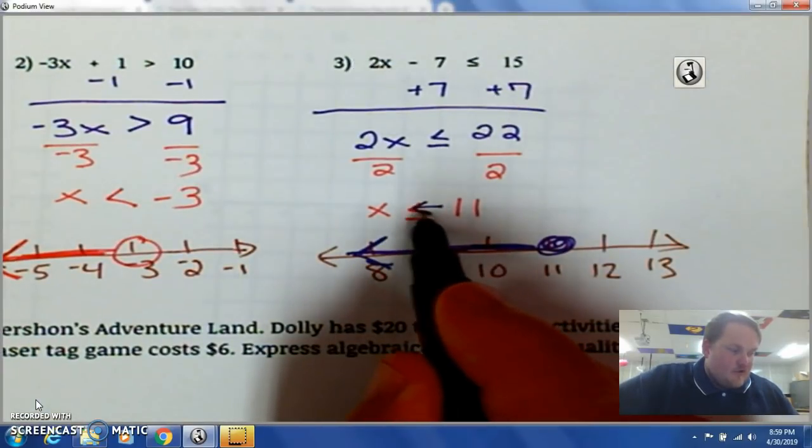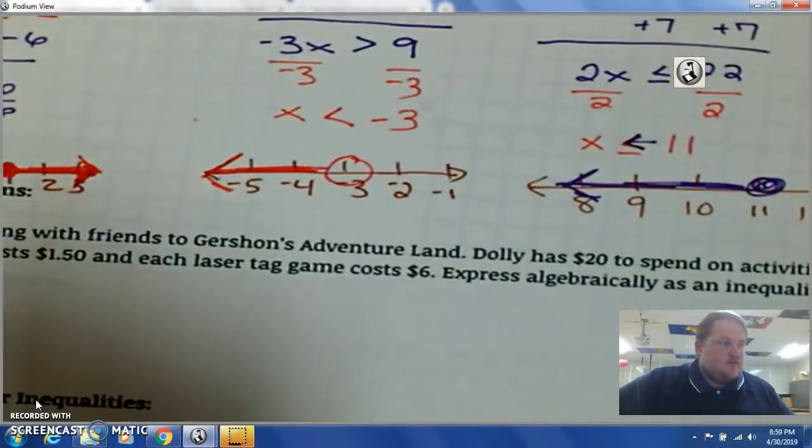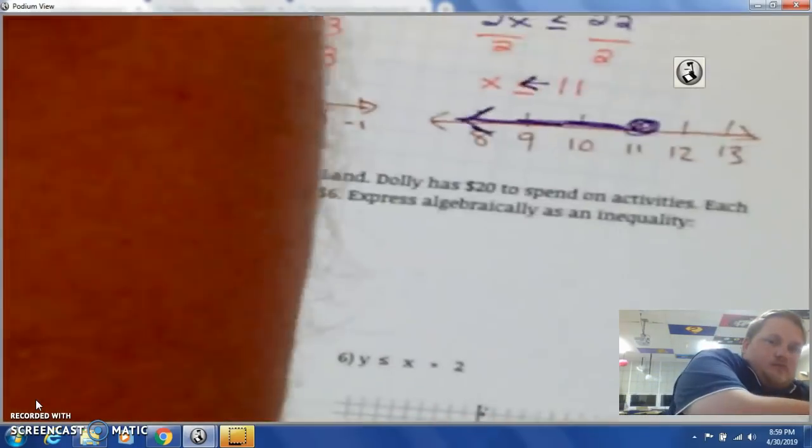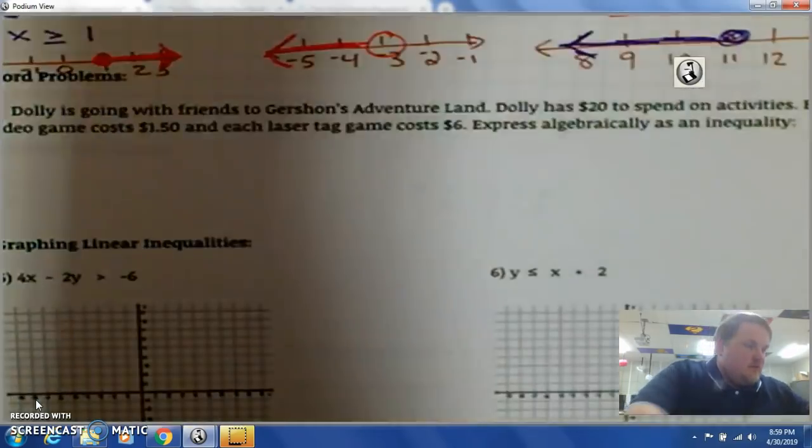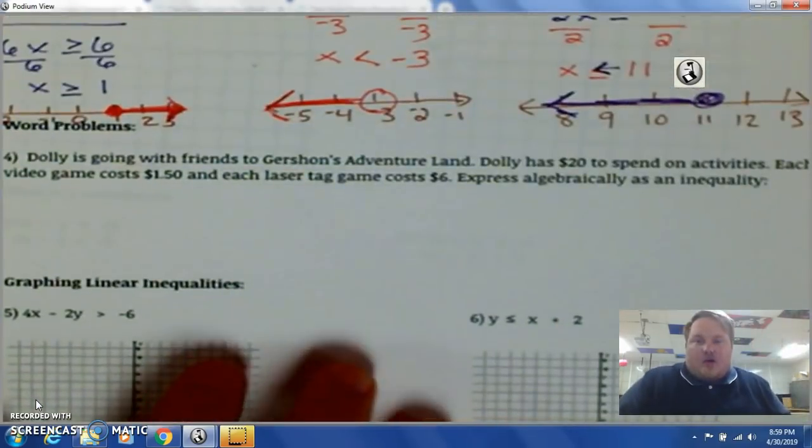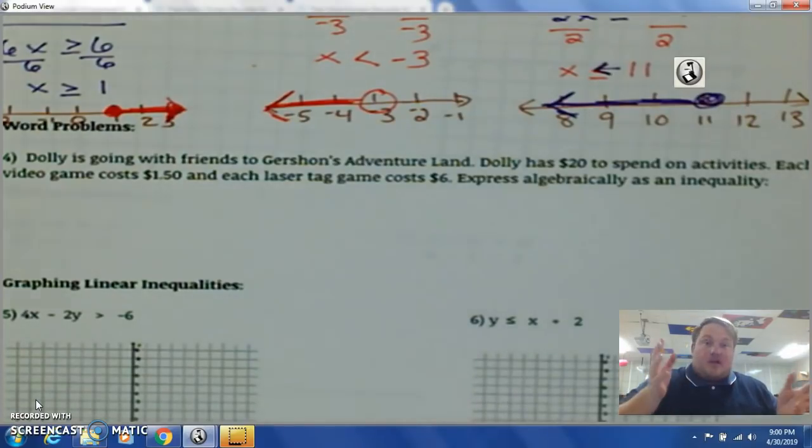It's almost like this is an arrow telling you where to go. Word problems. Dolly is going with friends to Gershon's Adventure Park. Dolly has $20 to spend on activities. Each video game costs $1.50 and each laser tag game costs $6. What's the maximum amount she can, things she could go on. So, in this case, we're just trying to represent that as an inequality.